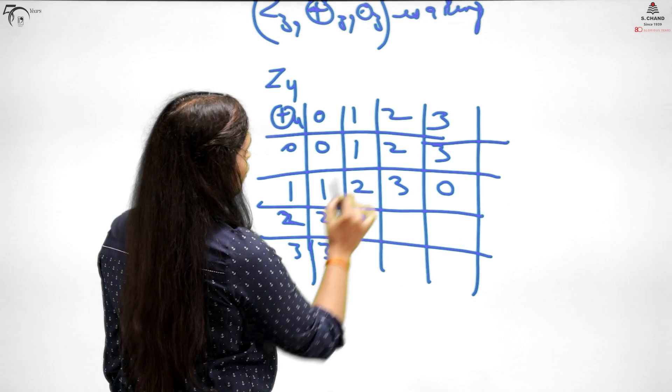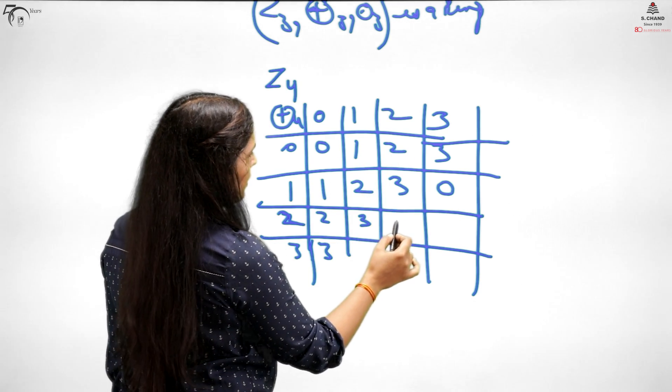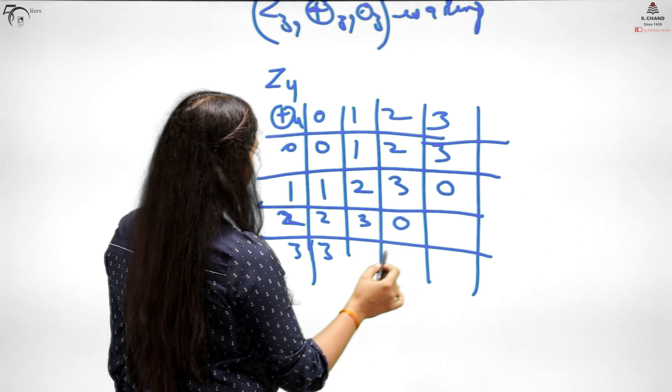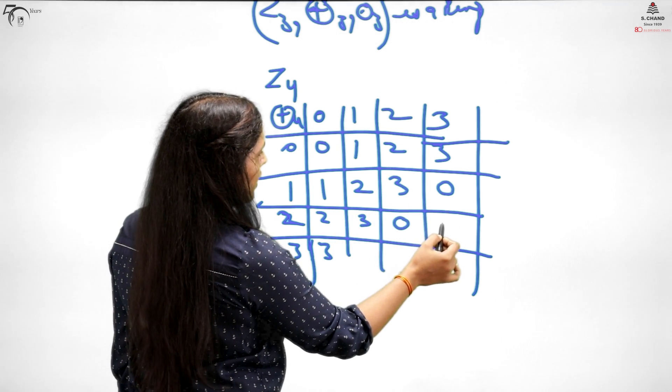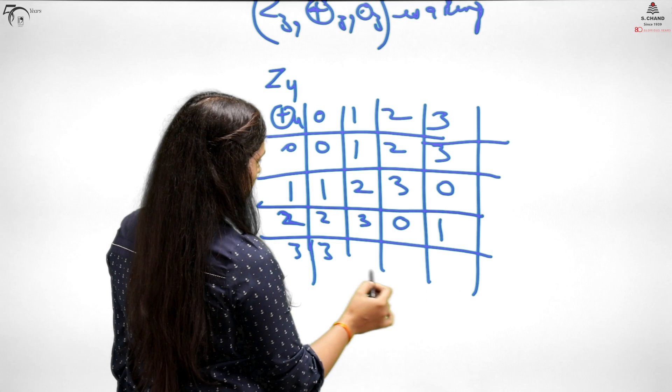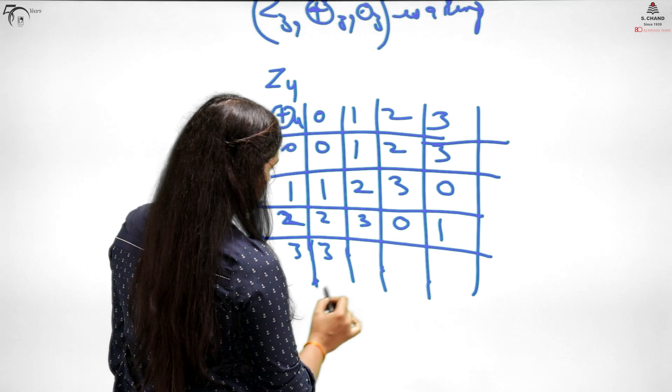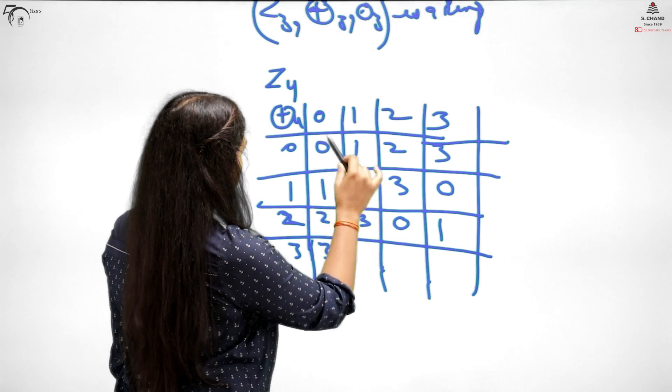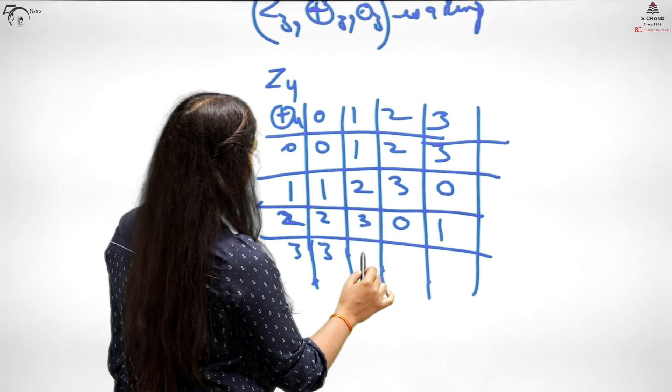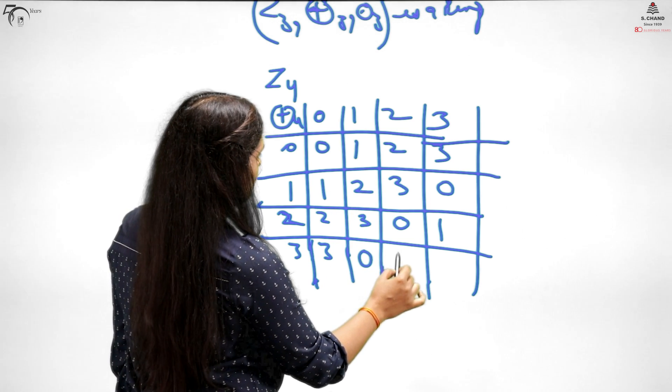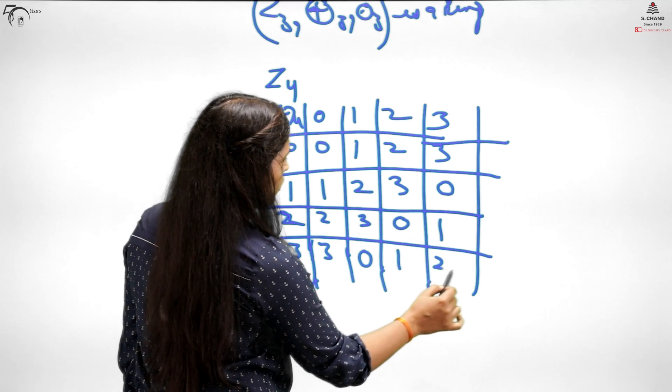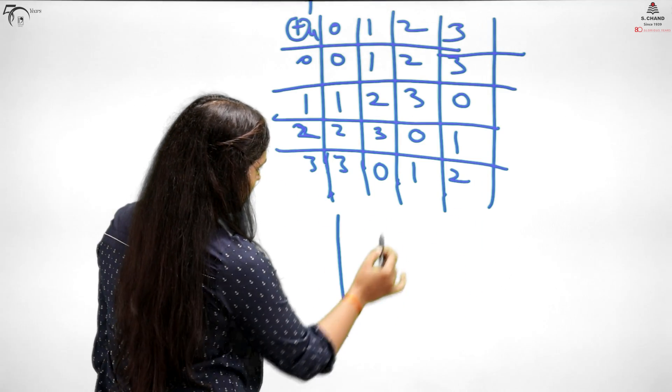Then 3 plus 0 is 3, 3 plus 1 is 4, remainder 0. 3 plus 2 is 5, remainder 1. 3 plus 3 is 6, remainder is 2. Now let's look at dot.